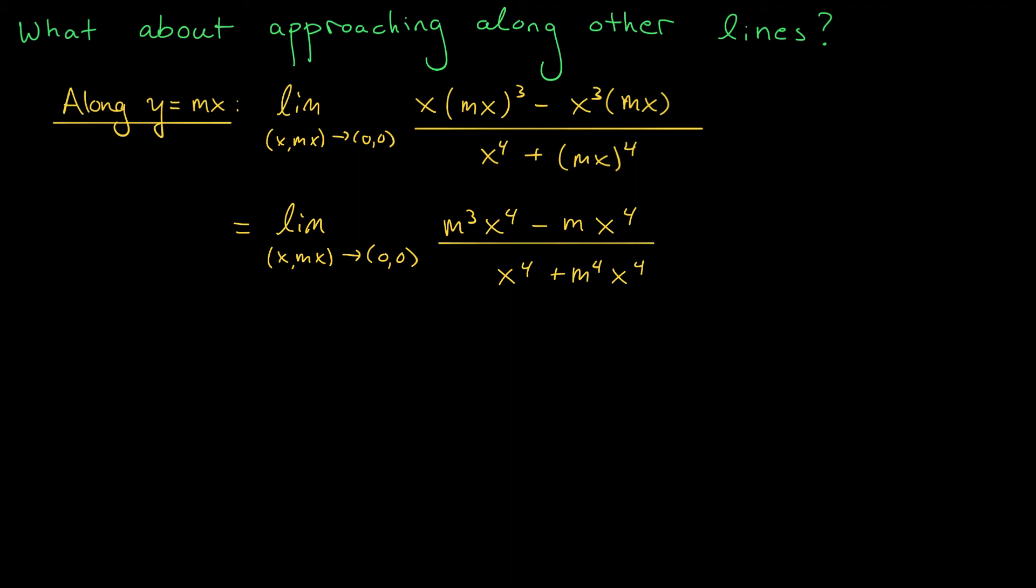Oh wow, that's a lot of x⁴, right? Actually, I think I can just cancel these out. I could factor out that x⁴ and cancel it with the terms on the bottom. That leaves me with the limit as (x,mx) goes to (0,0) of (m³ - m) divided by (1 + m⁴). Notice that the expression inside my limit is constant. It doesn't depend on x. m is the slope of the line. It's a constant. So my limit along this path is (m³ - m) divided by (1 + m⁴).